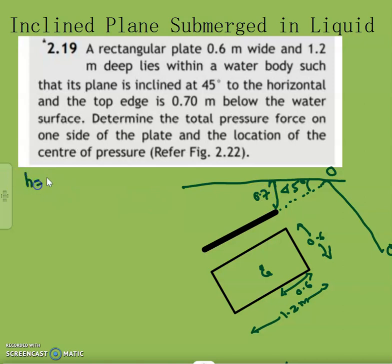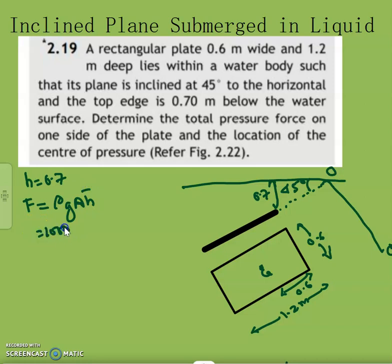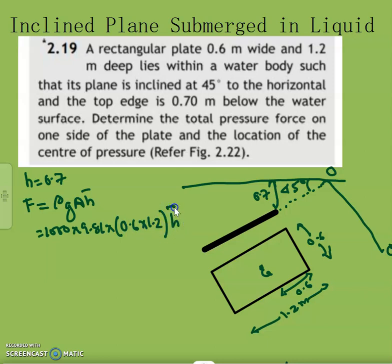That is the distance h_i marked as 0.7. Total pressure F is equal to rho times g times A times h_bar. Rho is 1000, g is 9.81. Area A is b into d, that is 0.6 into 1.2, into h_bar.